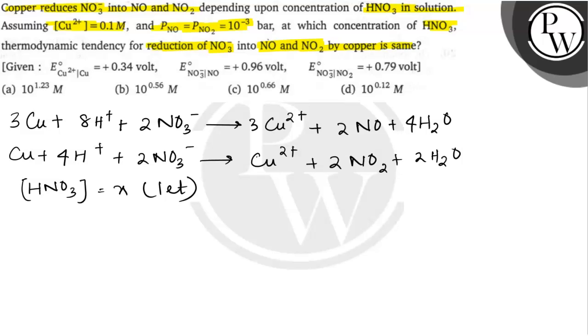Toh us ke hesaab se, H plus ka concentration bhi humko kitna milega? We are X similar. So concentration of H plus will equal to X. And NO3 minus ka concentration, uska concentration bhi humko X.